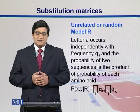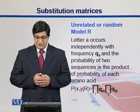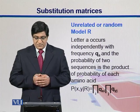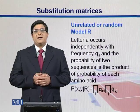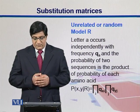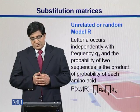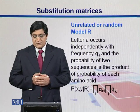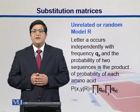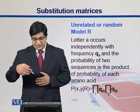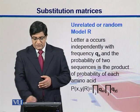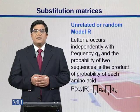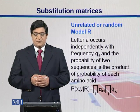We can have two models. In the random model, a letter A occurs independently with frequency QA, and the probability of two sequences is the product of the probability of each amino acid. So for xi and yj, if we have a random model, we take the product of their independent probabilities. This is the model where the sequences are unrelated — they just pair up by chance.